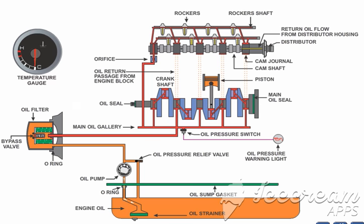Oil in the oil pan is pulled up by the oil pump through the oil strainer. The oil strainer filters out the large particles. The oil pump pressurizes the oil and pushes it towards the oil filter. The oil filter traps the smaller particles contained in the oil.